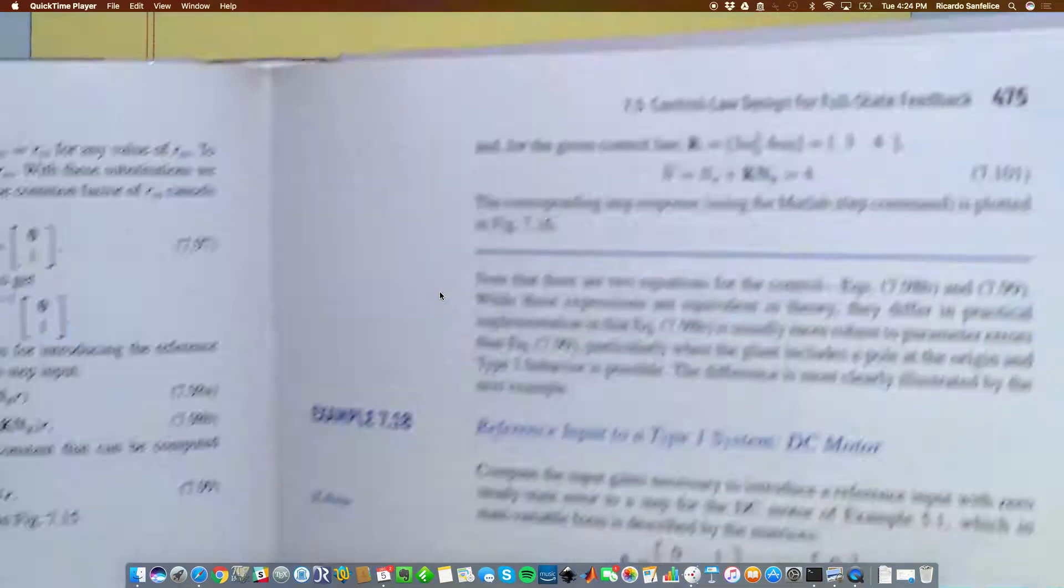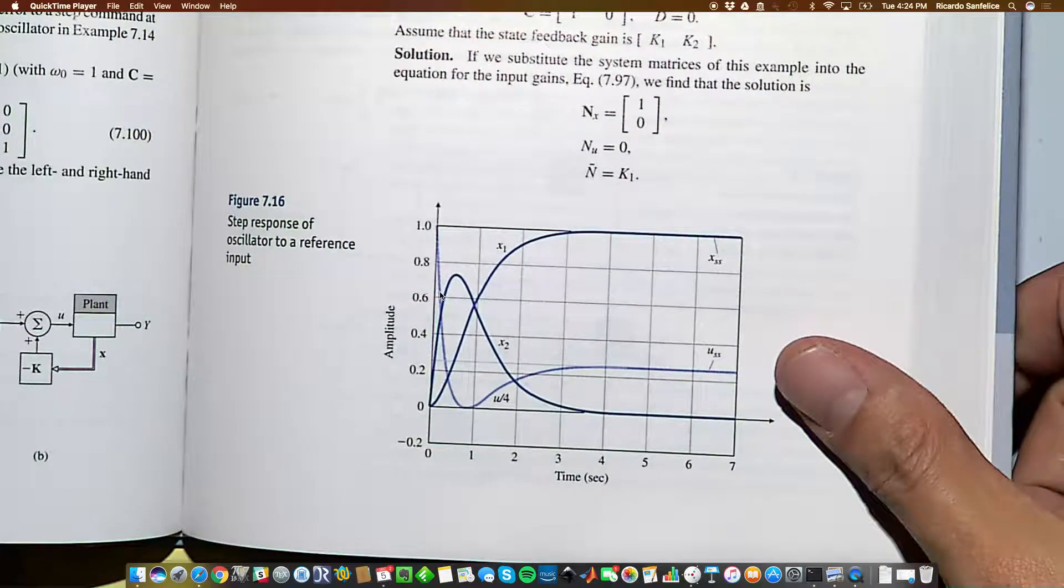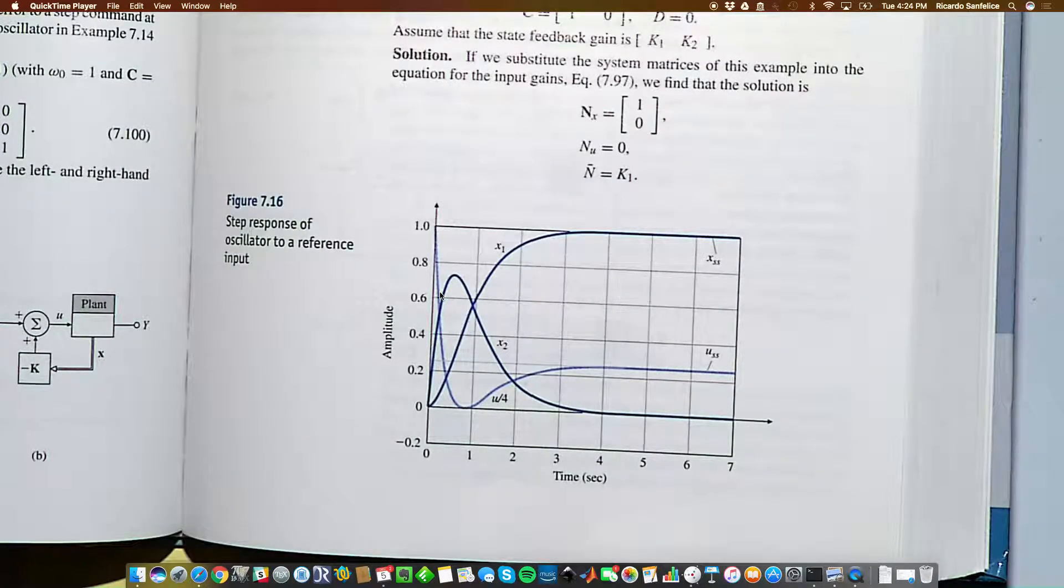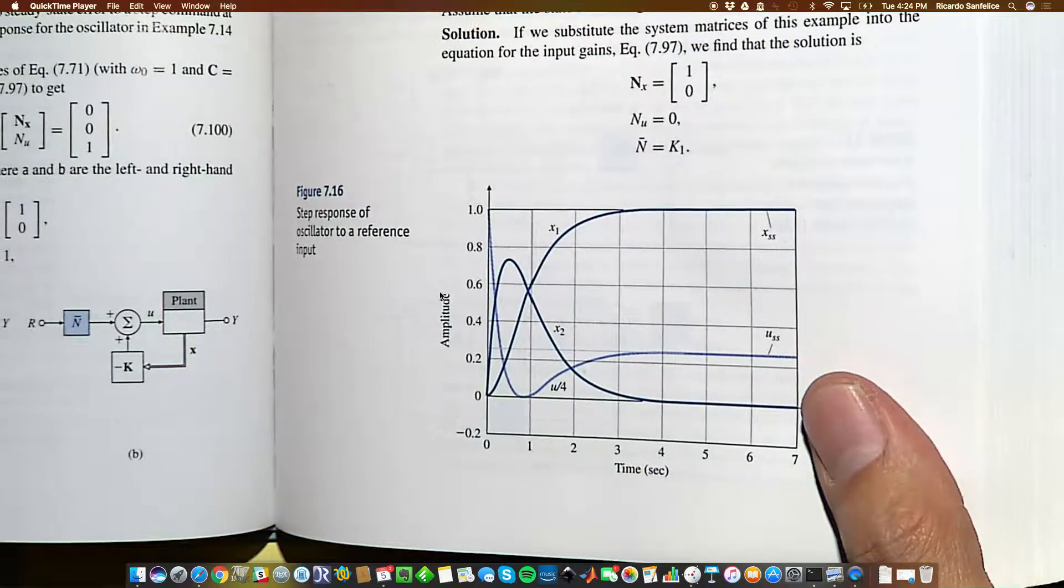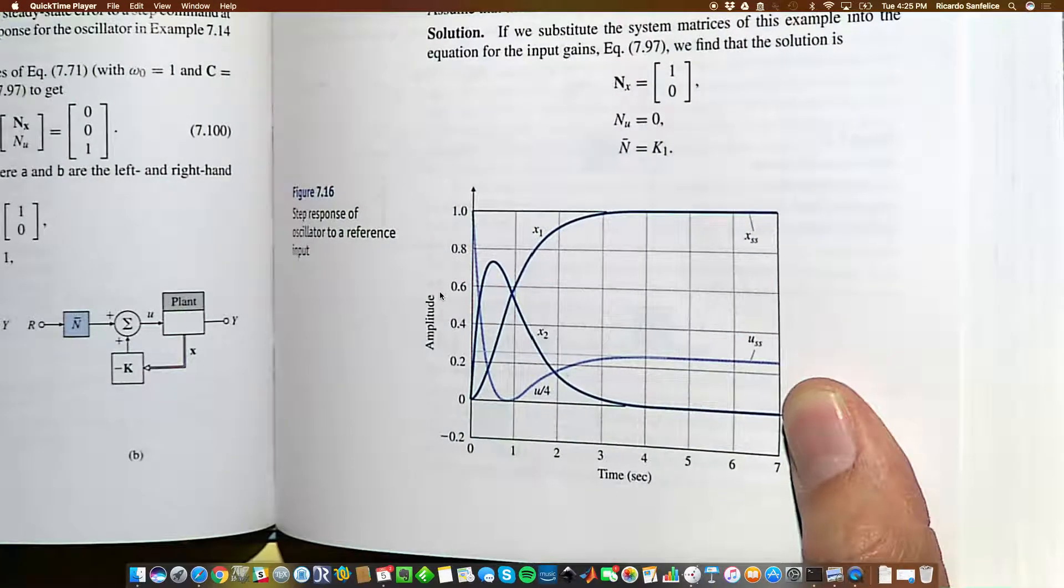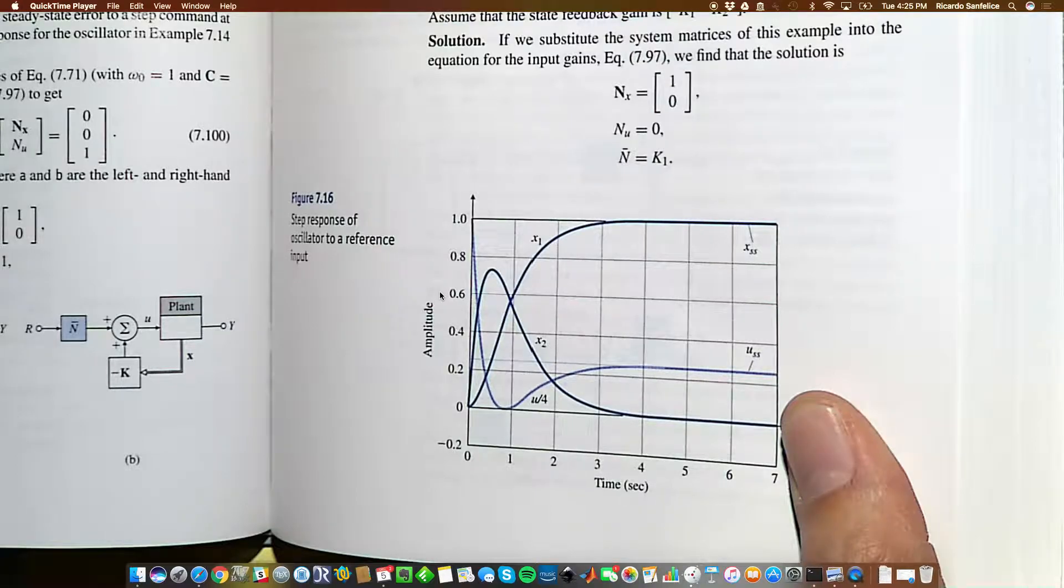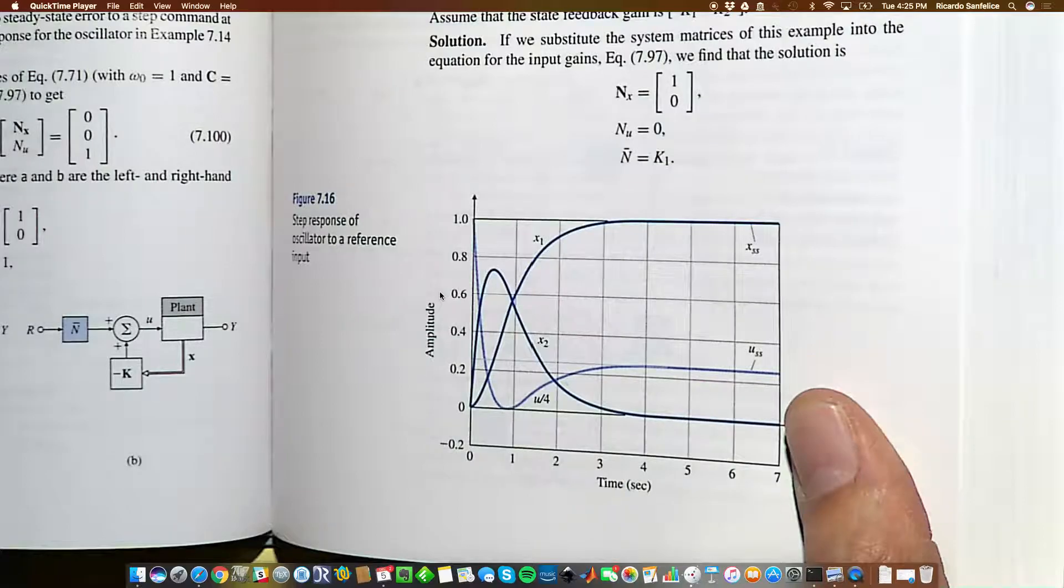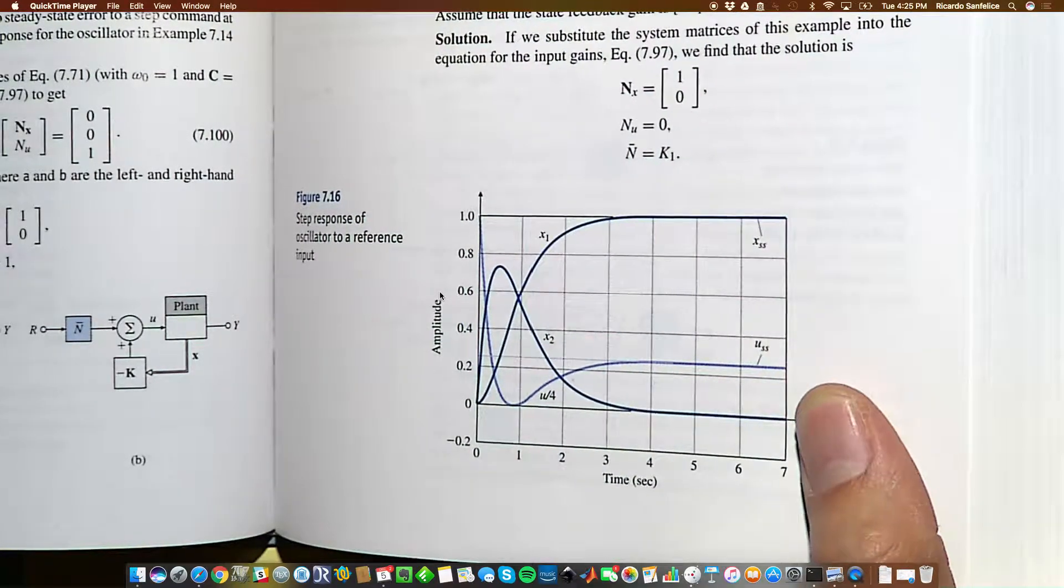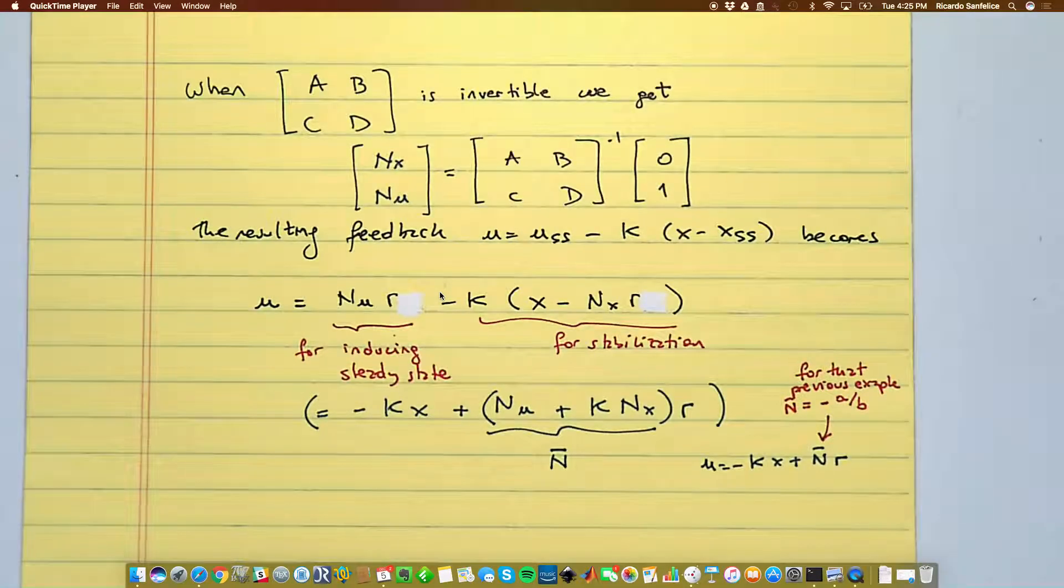We know that r is going to convert to r_ss so this is minus kx plus N_U and then from here minus minus plus k N_X and all these multiplying r. This is what the book calls N bar. So now you end up with a feedback of the form u equal minus kx plus N bar times r. And actually this N bar is the number that was proposed for that example. So for that example N bar was equal to minus a over b and r_ss was equal to x_ss. So whenever we can solve for these so called tracking equations we can track any reference in any dimension which is quite nice.